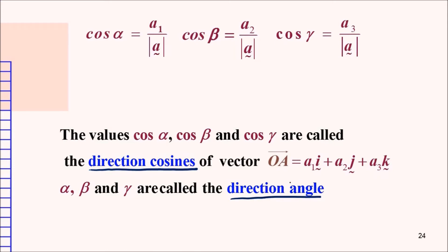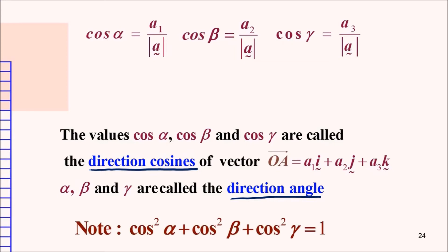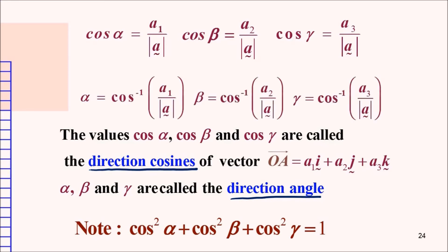This is different from the angle between two vectors. The angle between two vectors is labelled as theta, but if it's alpha, beta, and gamma, we call those the direction angles of the vector. Here's a note: if we take cos squared alpha plus cos squared beta plus cos squared gamma, the value equals 1. To find the direction angles, we just take the inverse cosine of the respective direction cosine values.